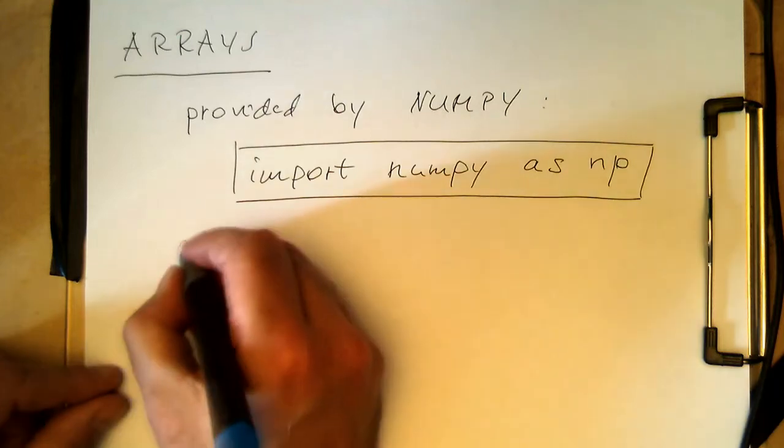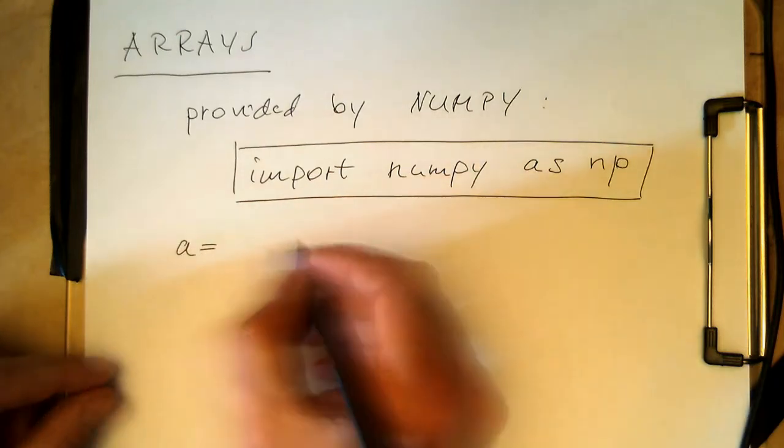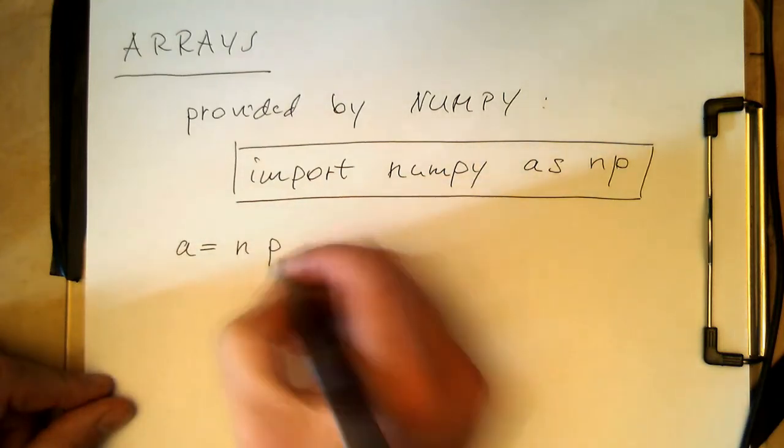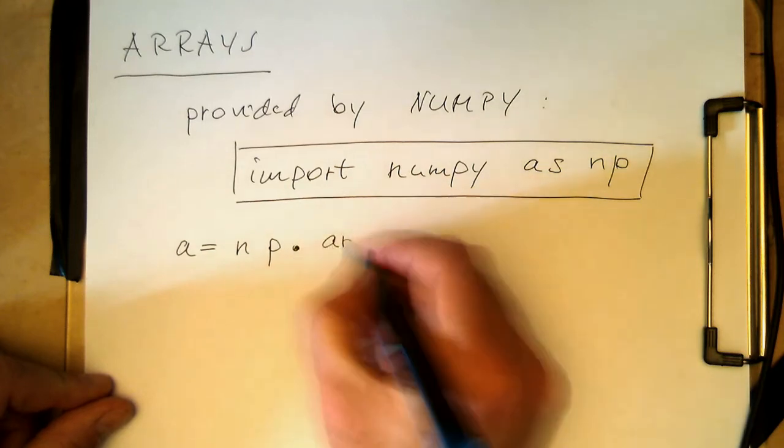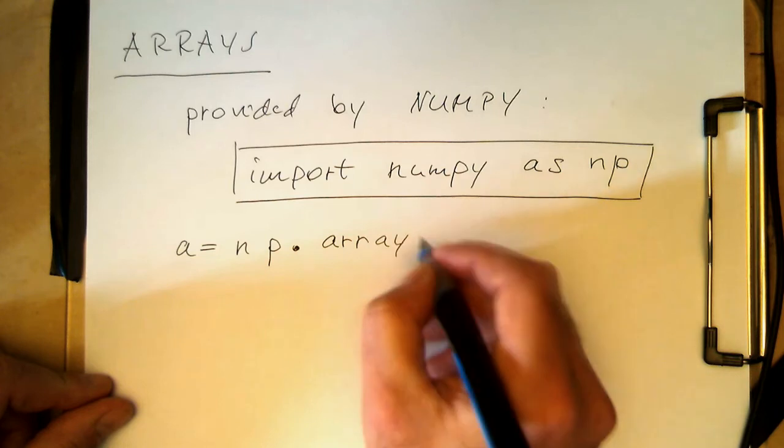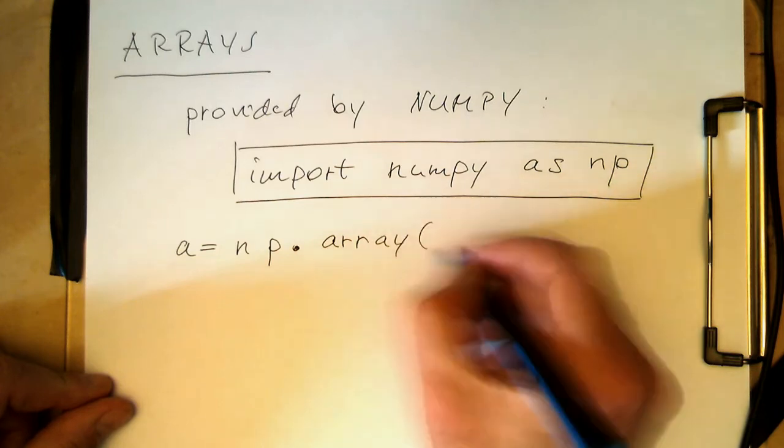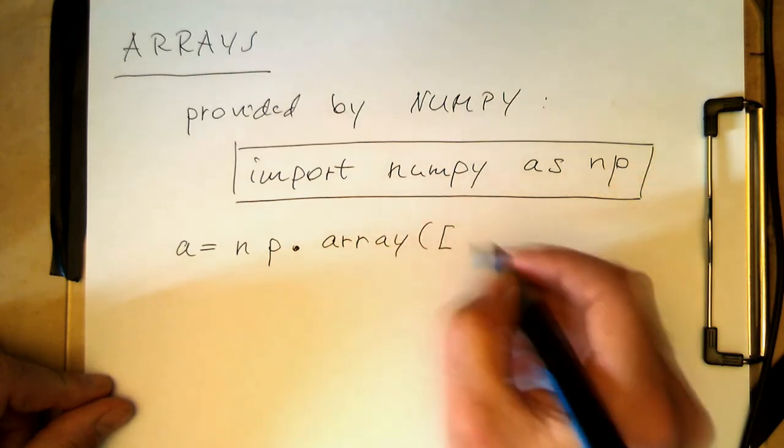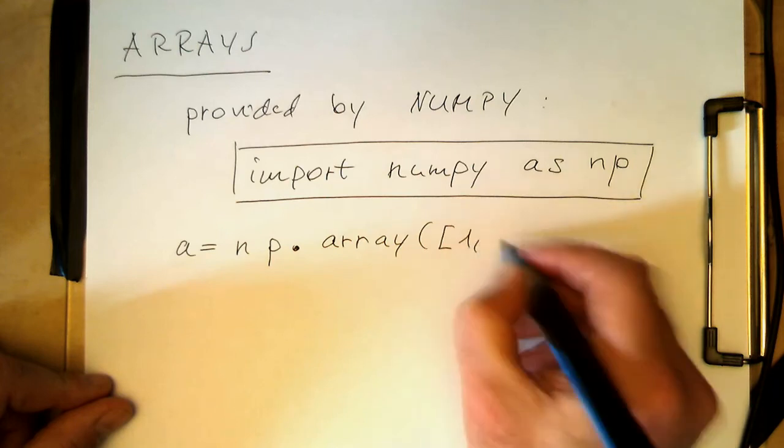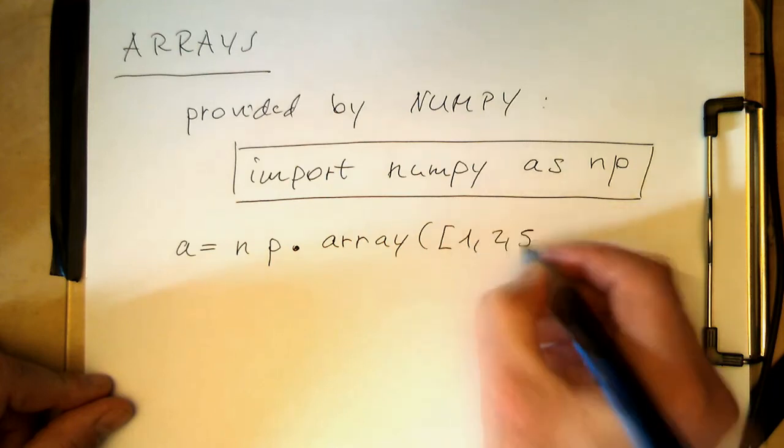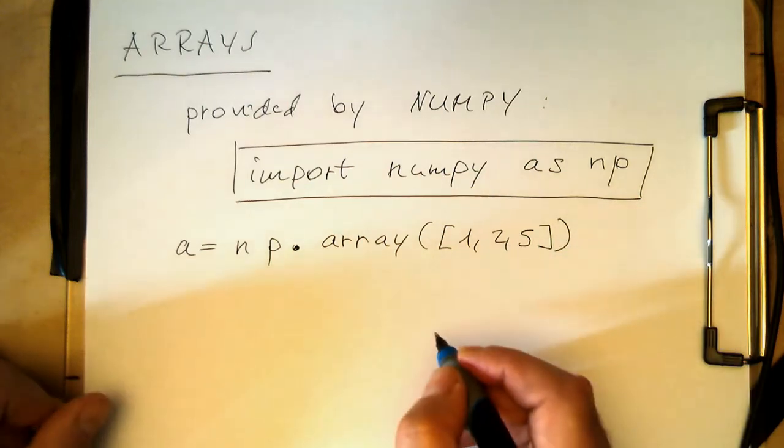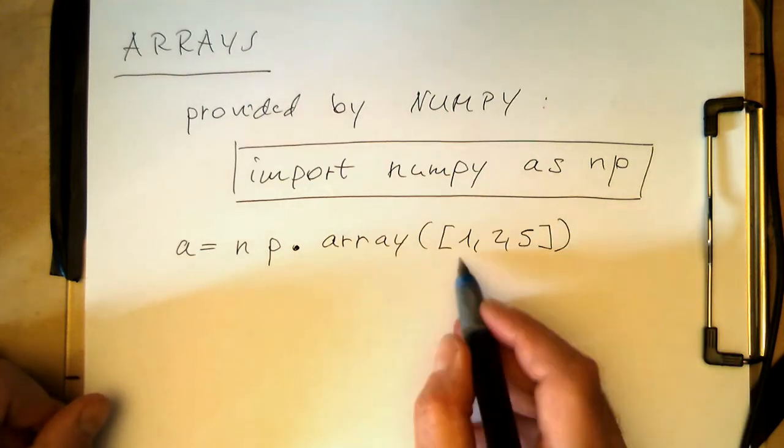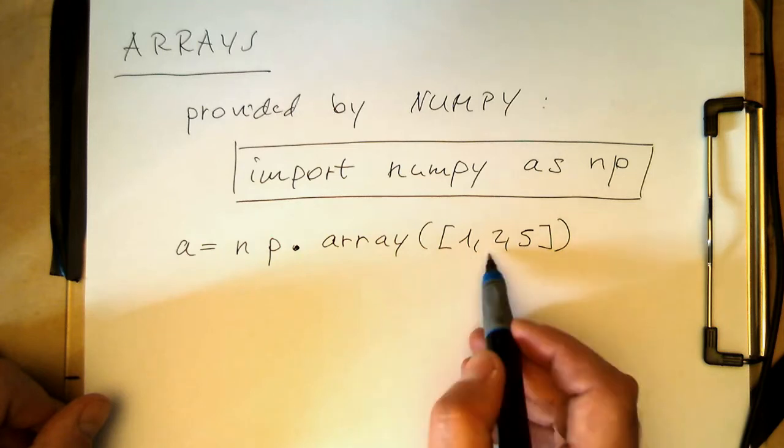And then we can do things like a equals np.array, and we create this by using lists, for example. With this command we are creating an array containing the numbers 1, 2, and 5.